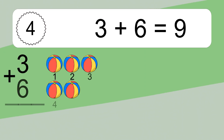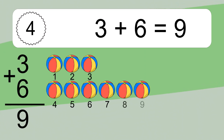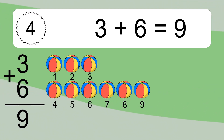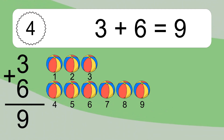3 plus 6 equals 9. Let's count it. 1, 2, 3, 4, 5, 6, 7, 8, 9.